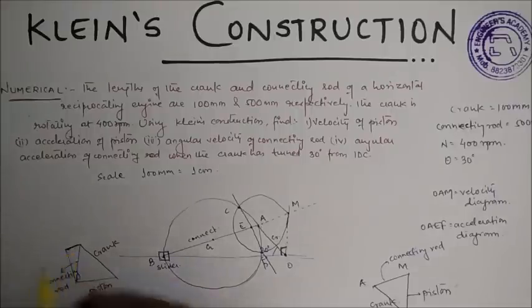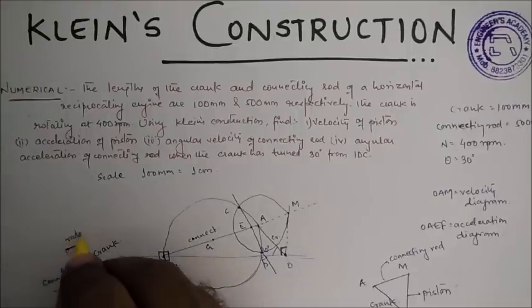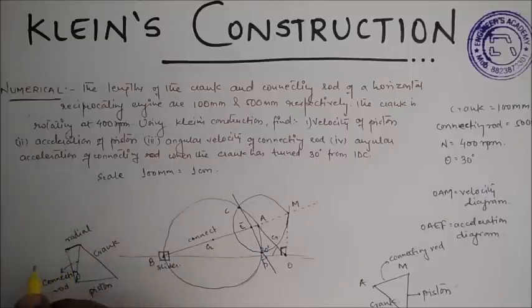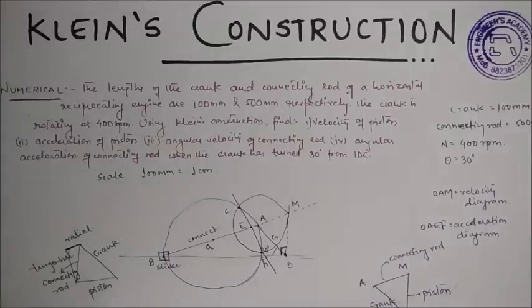So this line will be the radial component and this line will be the tangential component. Now from the velocity diagram and acceleration diagram, how we calculate the velocity, acceleration, angular velocity, and angular acceleration of various links and the points on links.